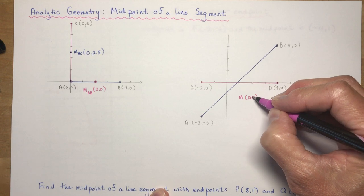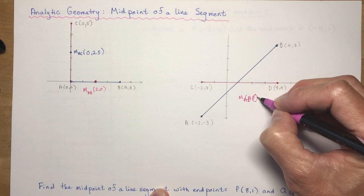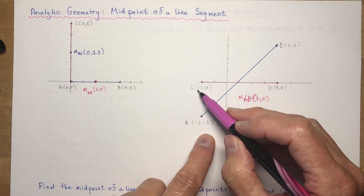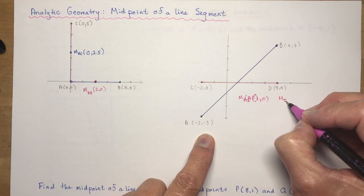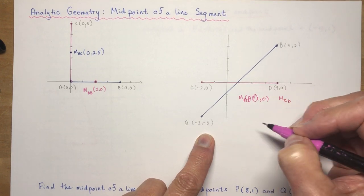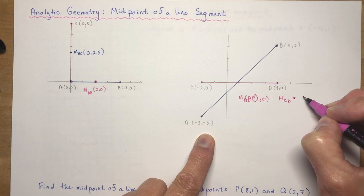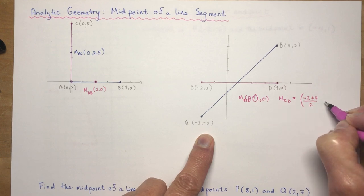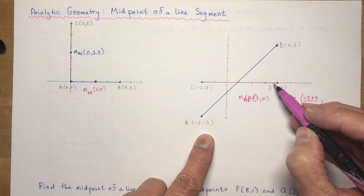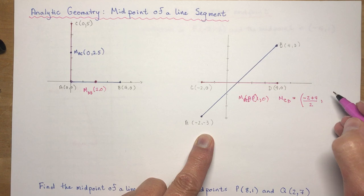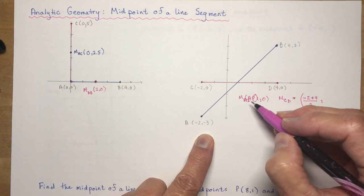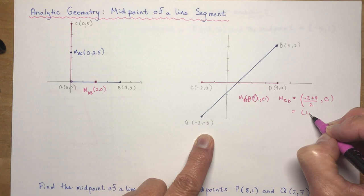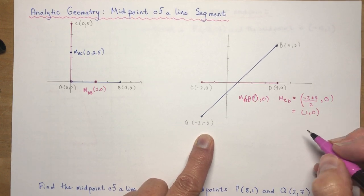So midpoint CD equals (1, 0). How did we get that? The math you're doing is: add the x-coordinates together — minus 2 plus 4 — and divide by 2. Since both points are on the x-axis, the y-coordinates are both 0, so 0 plus 0 divided by 2 is 0. Minus 2 plus 4 is 2, divided by 2 gives 1, so the midpoint is (1, 0).